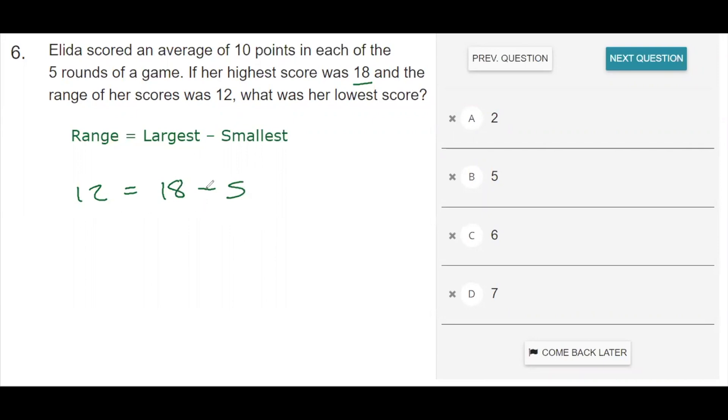So 18 minus what number is equal to 12? And that value is 6. So that means the smallest value or the lowest score that Elida scored was a 6.